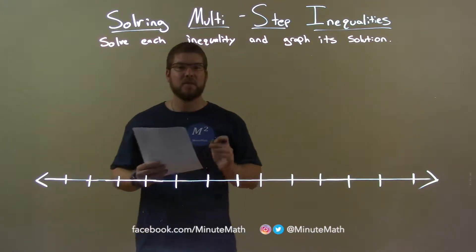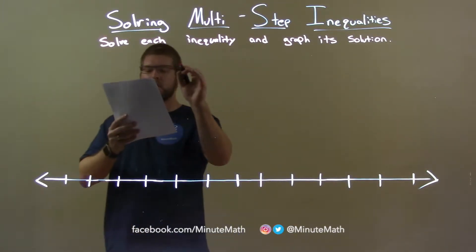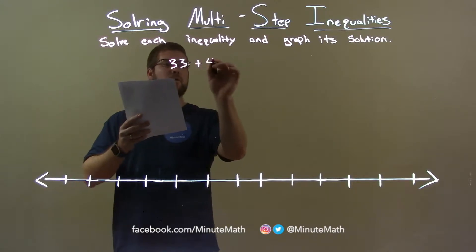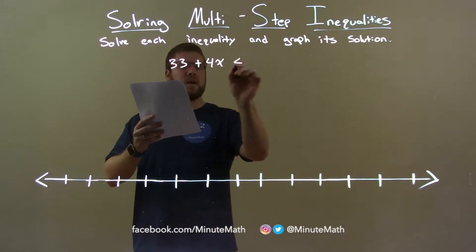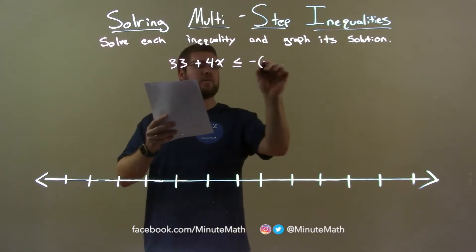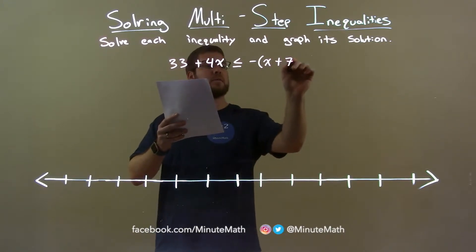So, if I was given this inequality, 33 plus 4x is less than or equal to negative x plus 7.